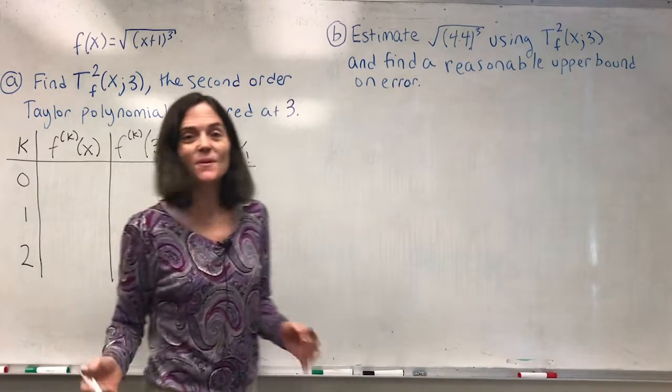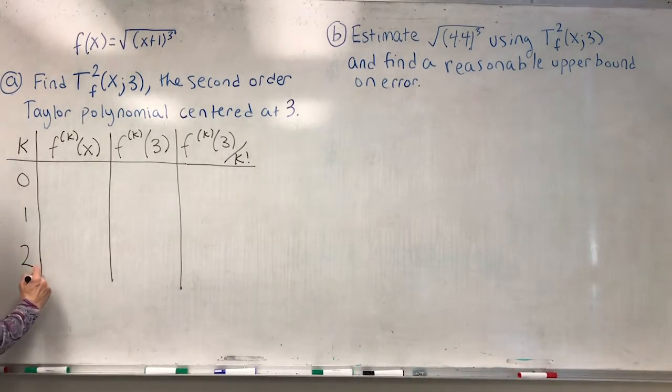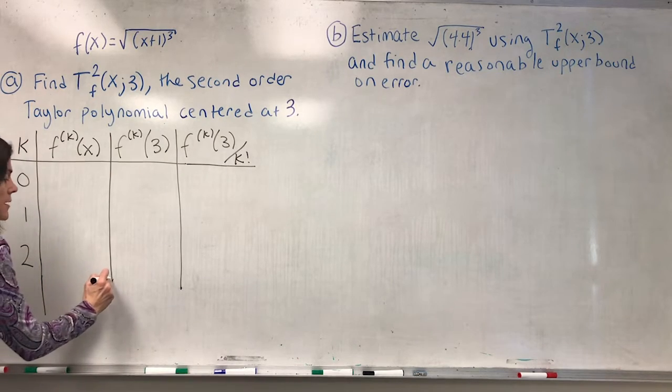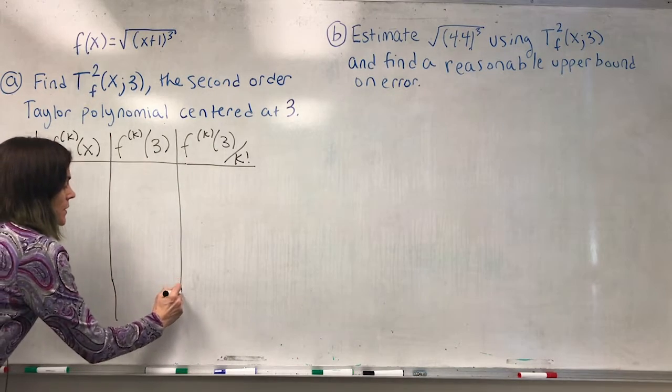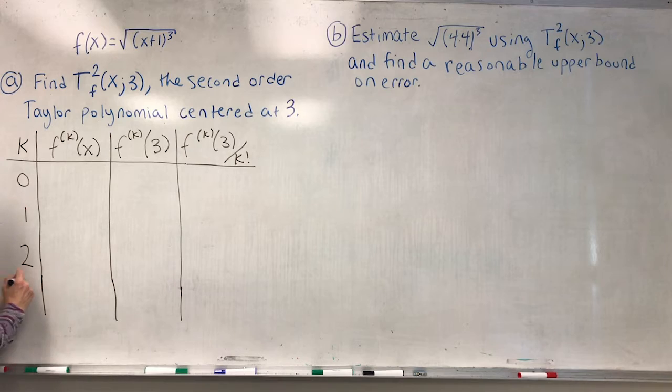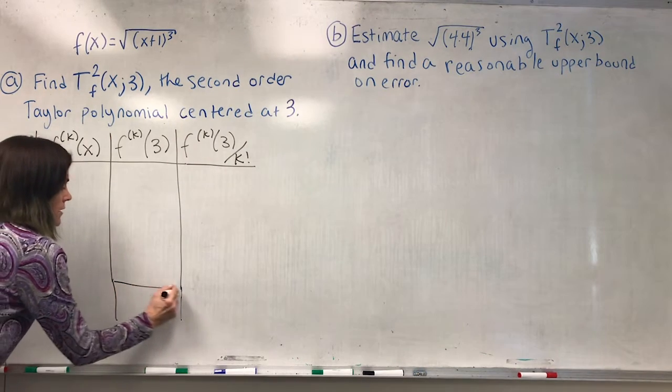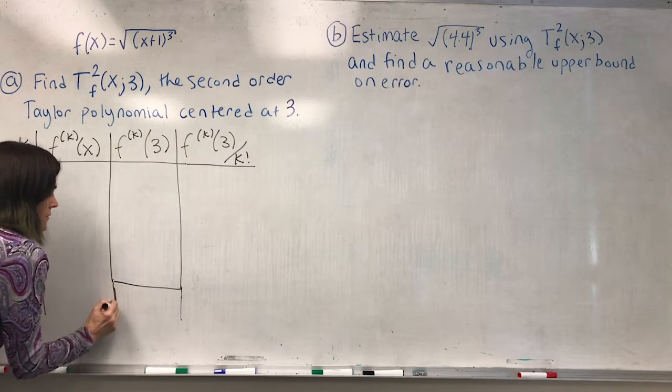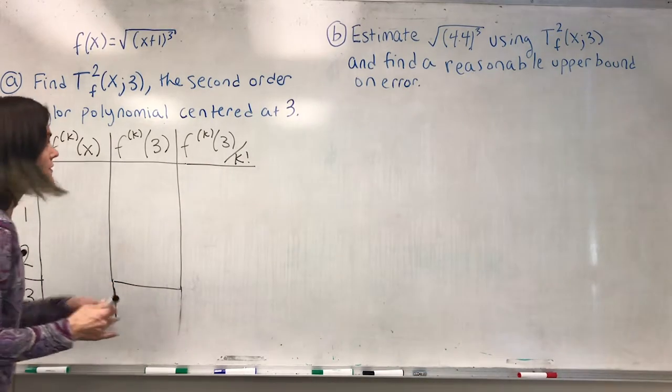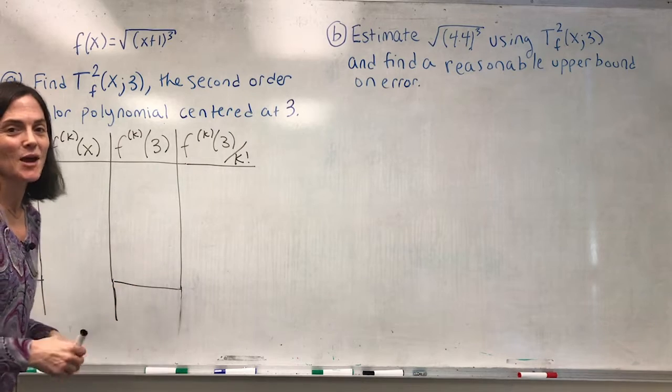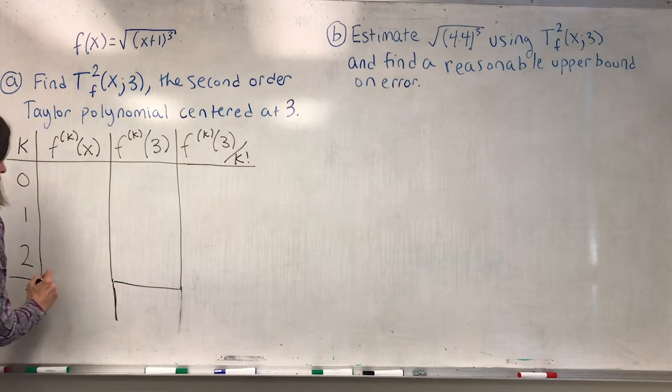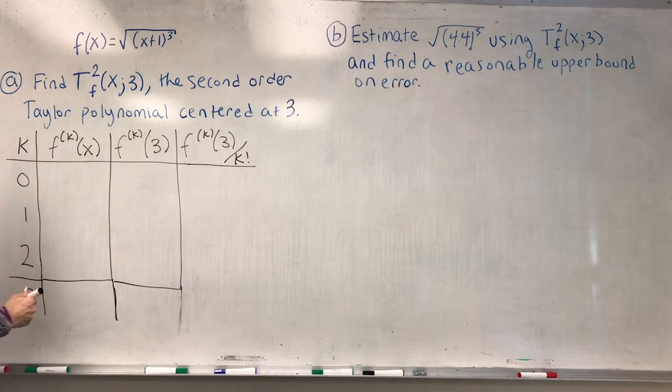So you might as well go ahead and take one more derivative because of the Taylor Lagrange theorem about the remainder. So we take one more derivative, except I don't really need to evaluate this one more derivative at 3. It's not anything I need.